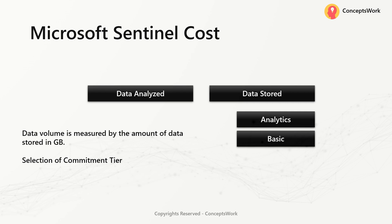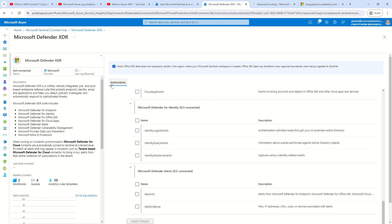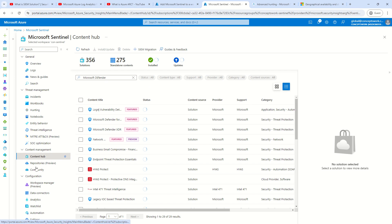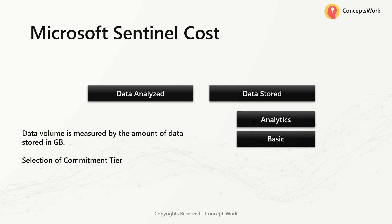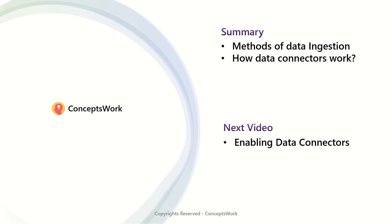The last aspect to discuss from a data ingestion perspective is Microsoft Sentinel cost. There are two aspects by which cost is calculated: data that is analyzed and data that is stored. I won't suggest anything specific on cost — please read the official Microsoft documentation. However, there is one setting I can show you related to the commitment tier for Sentinel, similar to how we define it for the workspace. In the next video, we'll get started with enabling data connectors and I'll explain how multiple components get installed when you onboard a specific data connector.